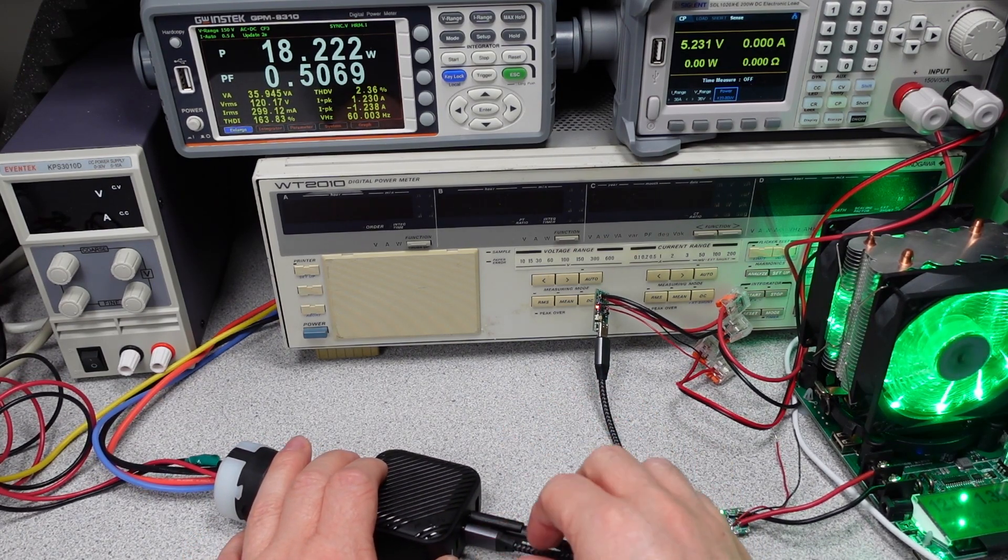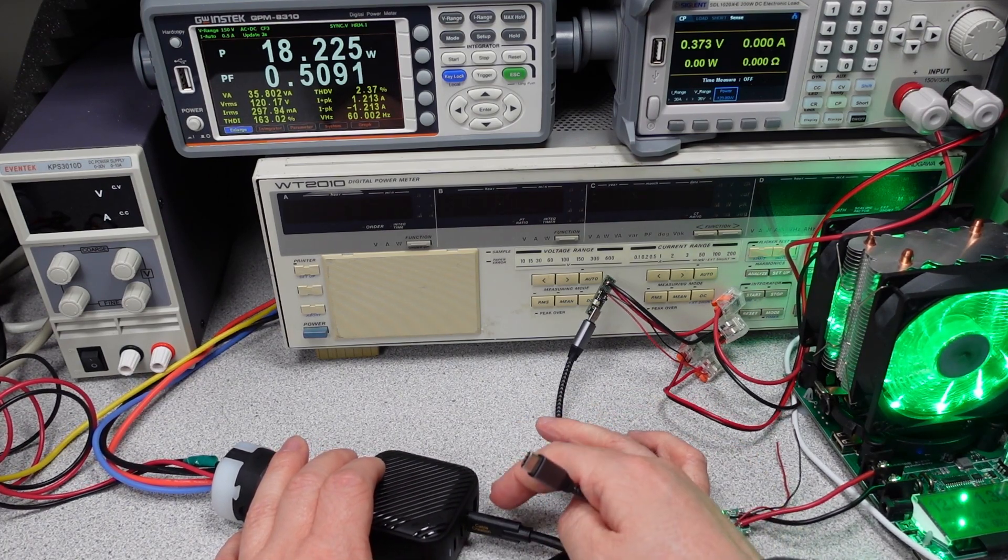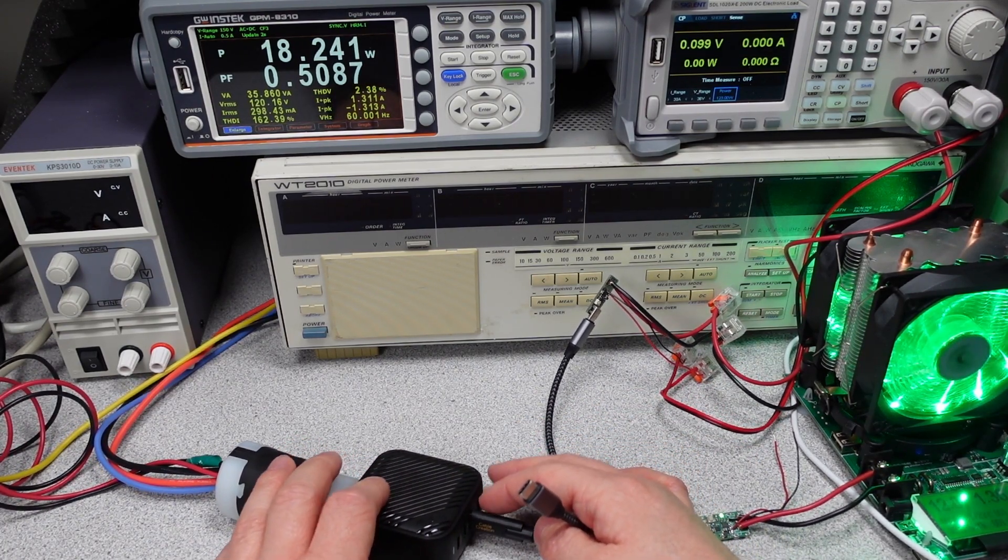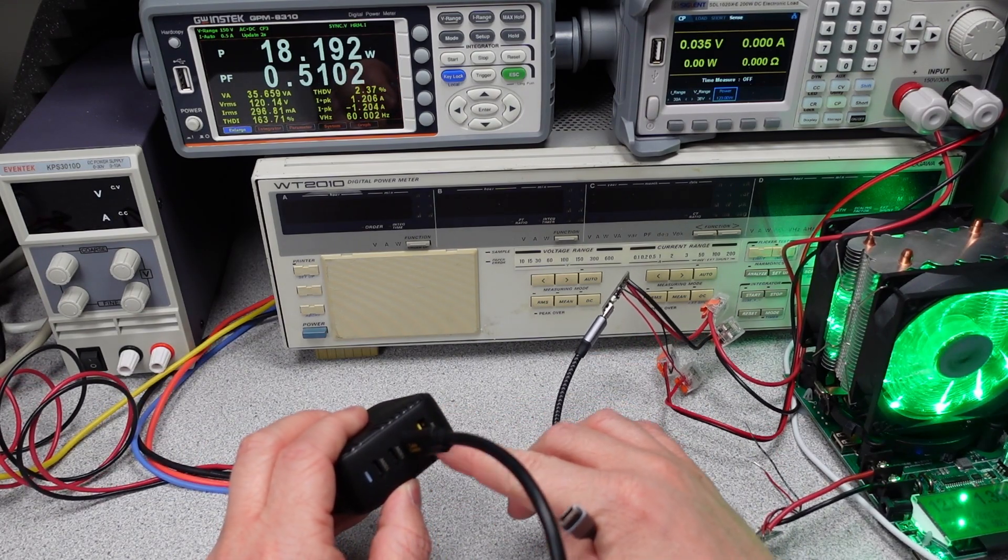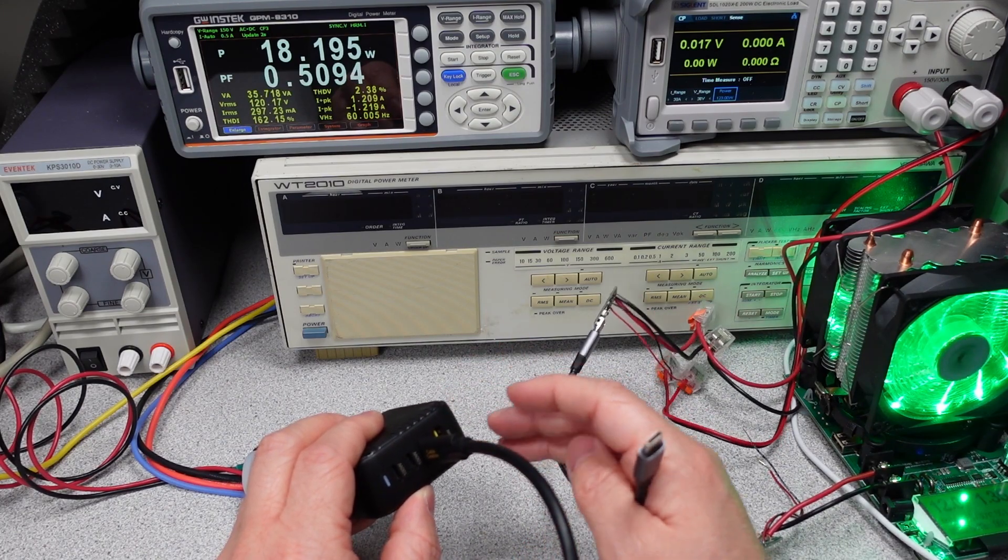So it does allow some port swapping while it's delivering power to another port, so that's good, at least in that case. So it looks like these two ports down here are linked together, so the USB-A and this first USB-C port seem to be tied together. So if you do swapping while these are plugged in, it resets those two ports.